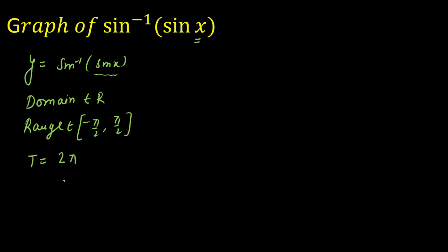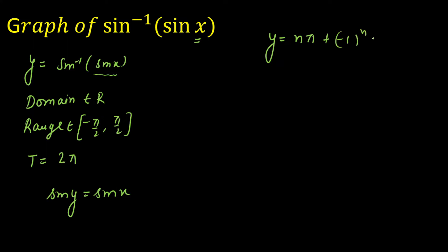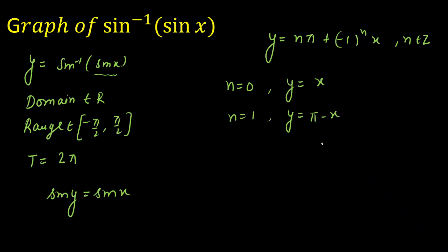Using these three pieces of information I can draw the graph. I also need one more: if y = sin⁻¹(sin x), then sin y = sin x, giving the general solution y = nπ + (−1)ⁿ x, where n is an integer. For n = 0, y = x. For n = 1, y = π − x. Using all this information I am going to draw the graph of sin⁻¹(sin x).